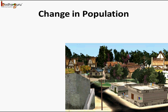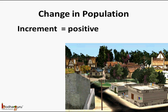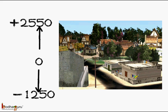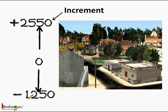Next, how do we use integers in representing population? When we talk about change in population, if the population increases we show it as positive, and if the population decreases we show that decrement as negative. So in a town Sundarpur, if the population increases we would say the change in population is plus 2,550. Same way, if the population decreased by 1,250, it indicates the decrement or decrease in population as negative.